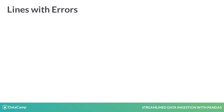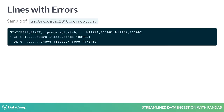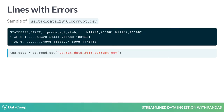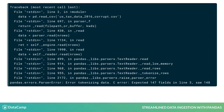One last issue you may face are lines that Pandas just can't parse. For example, a record could have more values than there are columns, like the second record in this corrupted version of the tax data. Let's try reading it. By default, trying to load this file results in a long error, and no data is imported.